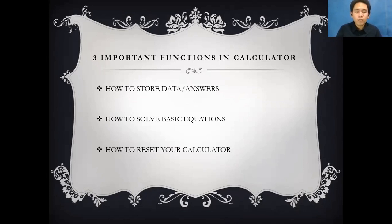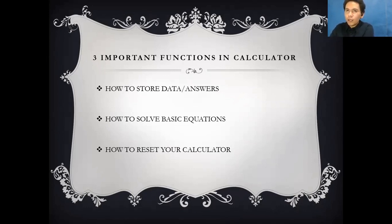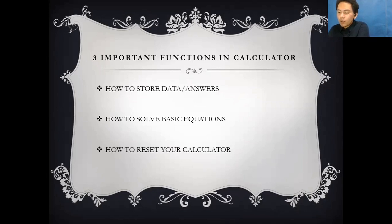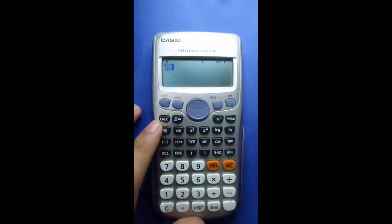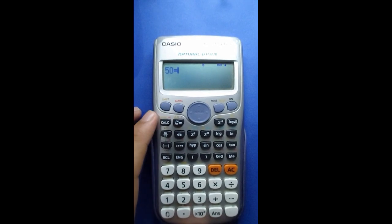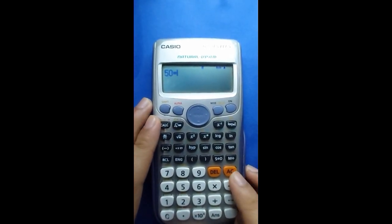Next, how to solve basic equations. This is what we call Shift Solve. For example, you are given the equation F equals MA — there is a force and a mass and acceleration. Since the problem gives force and acceleration, you have to find mass. Let's say force is 50. Press Alpha then Cal to show the equal sign, so force equals MA.